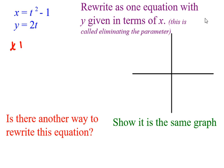So I could do x plus 1 is t squared. And then take the square root. When I take the square root, that's going to be my t.